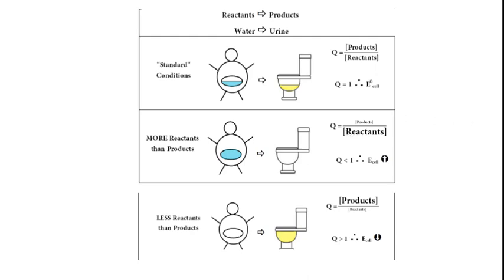So I'm going to take a look at a general reaction here—reactants forming products. And what I want you to think about is water forming urine. This reaction is thermodynamically favorable. It's going to happen. You drink water, you're going to have to go pee.